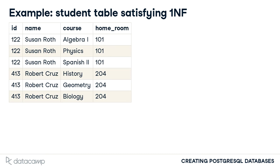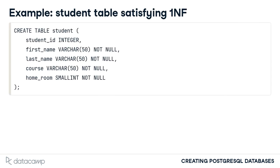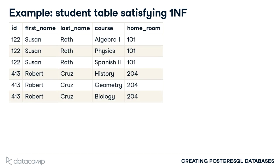One additional change is also necessary to satisfy first normal form. The name column includes a value that can further be divided into the student's first and last names. Our final table definition has five total columns and satisfies first normal form. A sample of this table's data is shown here. You might feel that there's a lot of duplicated data in this version of our table, and that intuition is correct. Those concerns will be addressed later in this chapter.